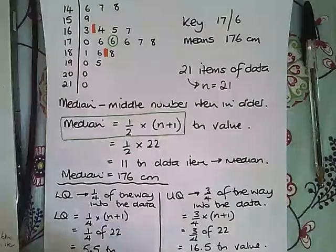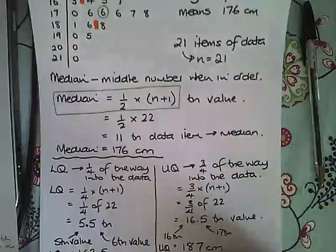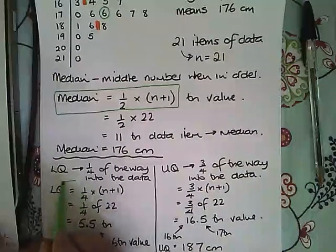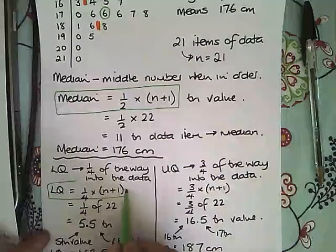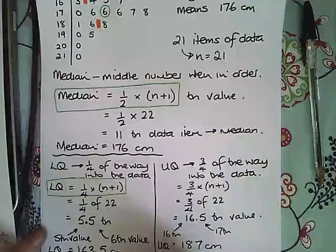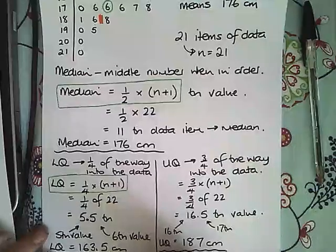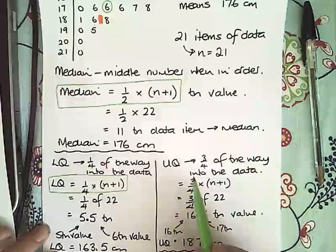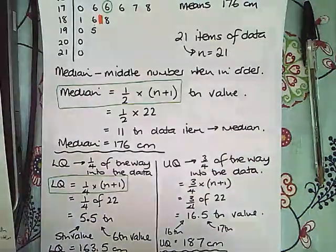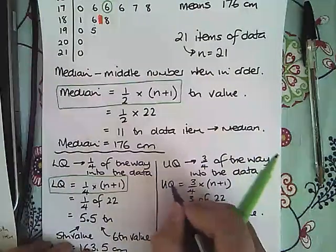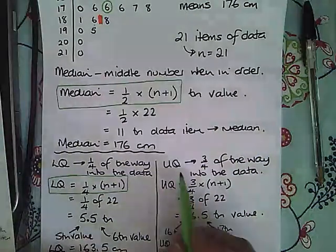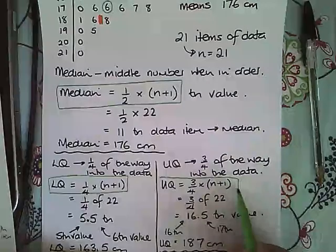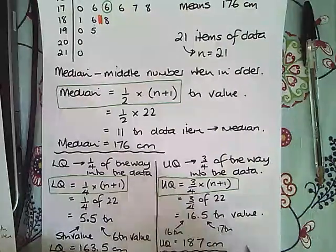To find the lower quartile, because that's a quarter of the way into the data, the lower quartile is equal to 1/4 times n plus 1 and find that value. And then the upper quartile is equal to 3/4 times your n plus 1 value.